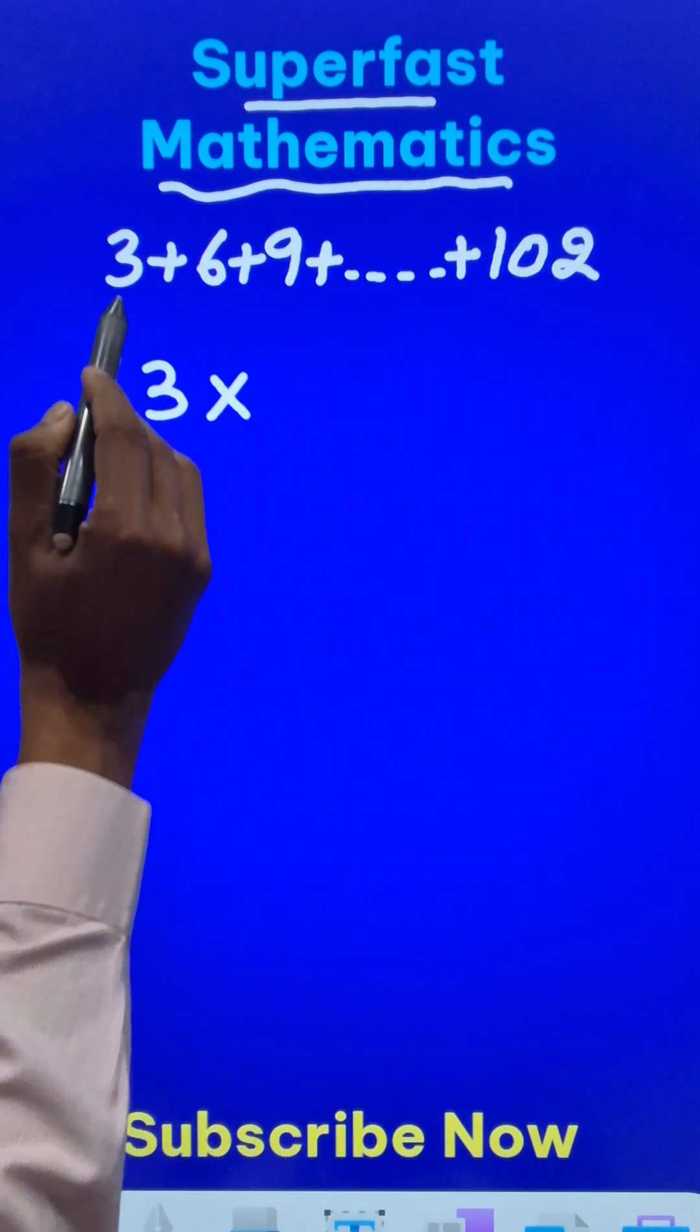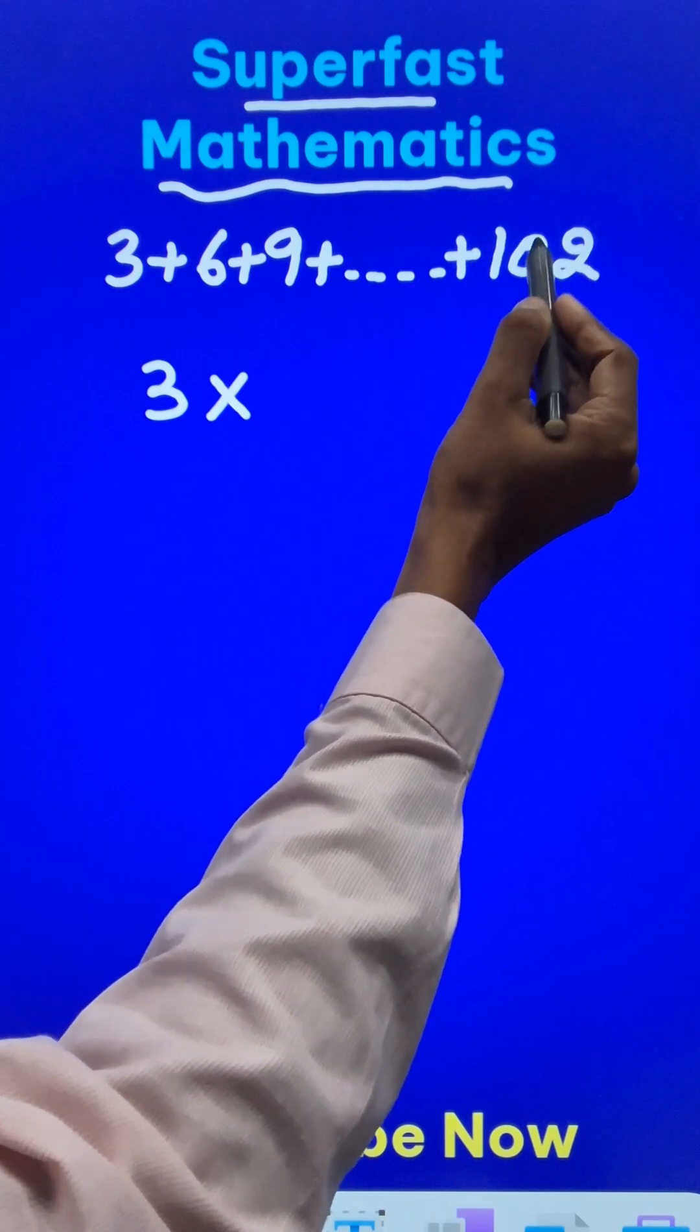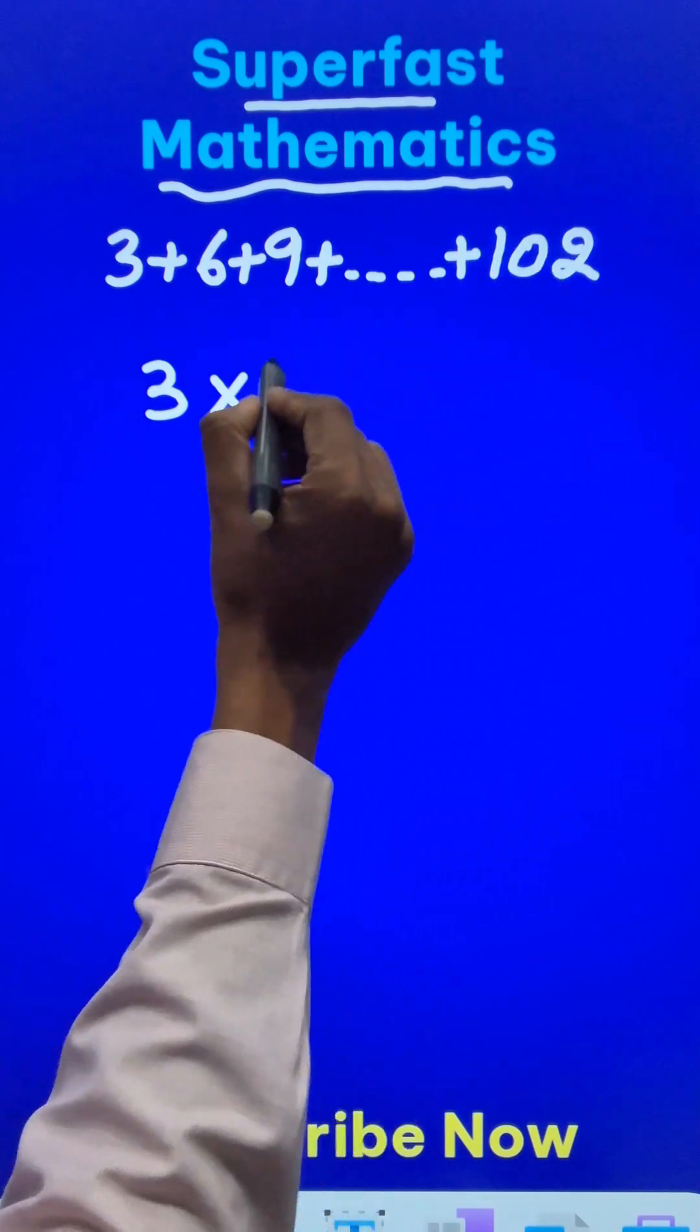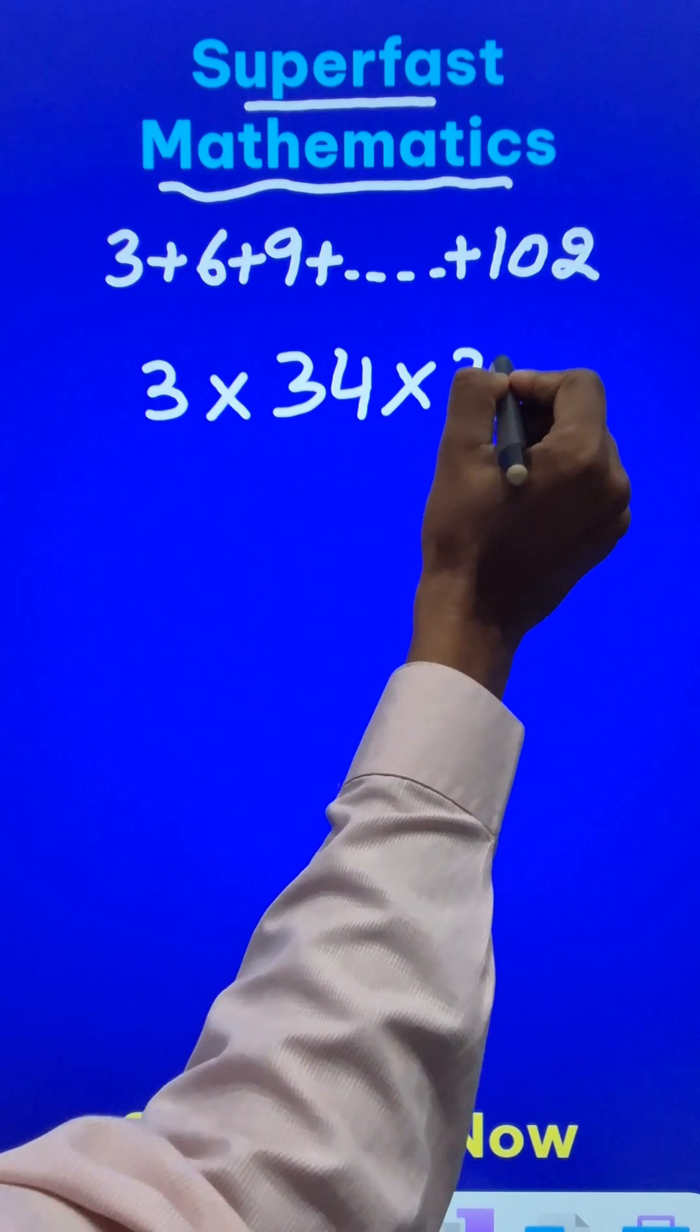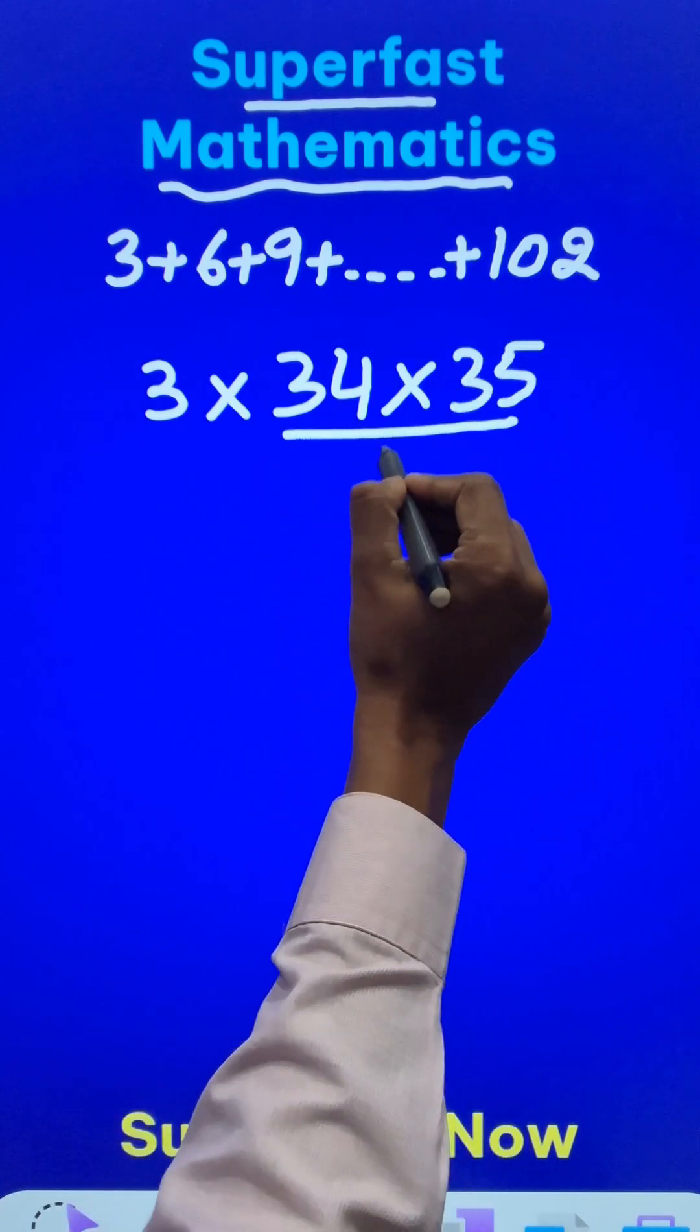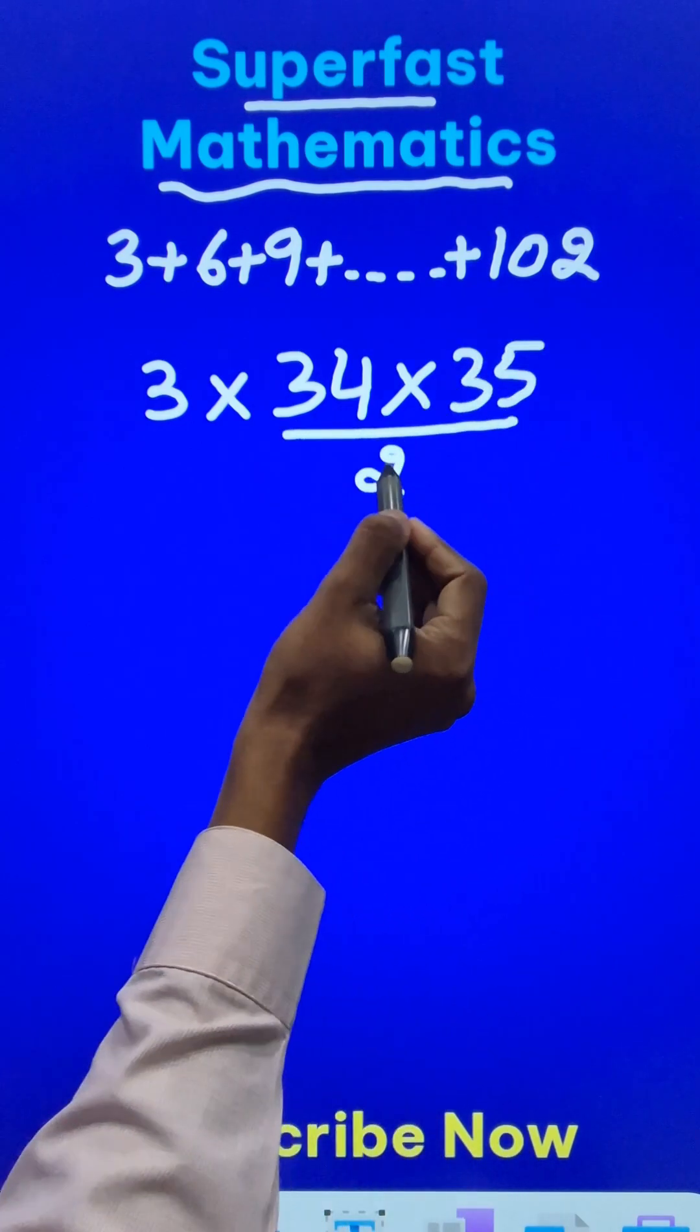And then if you see 102 divided by 3 is 34. So take 34, multiply it by its consecutive number 35 and divide the result by 2. Now this 2 is a fixed number.